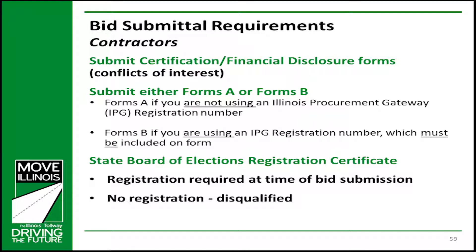One of the first requirements is the submittal of certifications and financial disclosures. These forms must be completed and submitted with your bid. We also request a copy of your State Board of Elections registration certificate. You must be registered with the State of Illinois at the time your bid is submitted or you will be disqualified. The State of Illinois mandates that the prime contractor submit either Forms A or Forms B disclosures with the bid. If you are not registered in the Illinois Procurement Gateway (IPG), you will submit Forms A. If you are registered with the IPG and have received your confirmation from the State, you will submit Forms B. If your Forms A or Forms B disclosures are not submitted with your bid, you will be disqualified.